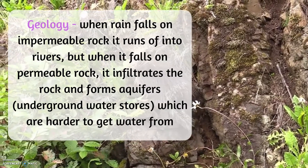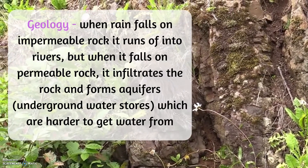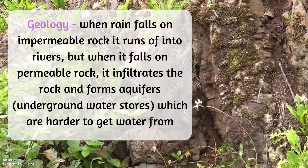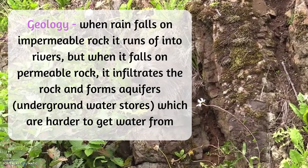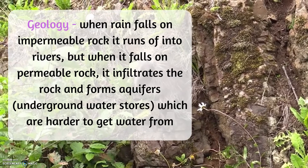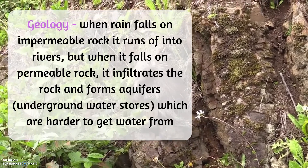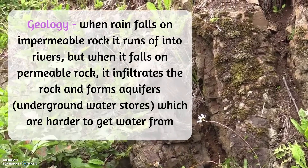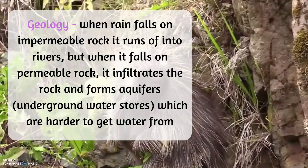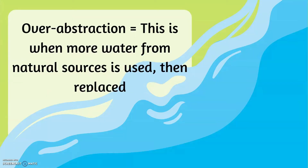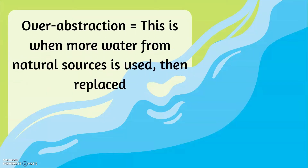it infiltrates the rock and forms aquifers — underground water stores — which are harder to get water from. Over-abstraction is when more water from natural sources is used than is actually replaced.